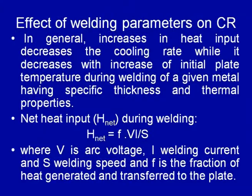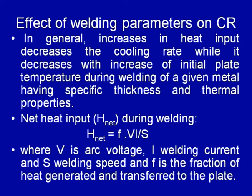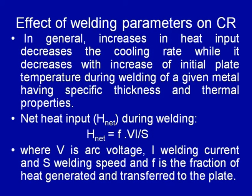To calculate the net heat input, we generally calculate from the product of the welding current and the arc voltage, since the arc is moving at a particular speed. By dividing the product of welding current and voltage by the welding speed, we obtain the net heat input. The equation is: H_net = F × V × I / S, where V is the arc voltage, I is the welding current, S is the welding speed, and F is the fraction of heat generated that is transferred to the plate during welding.